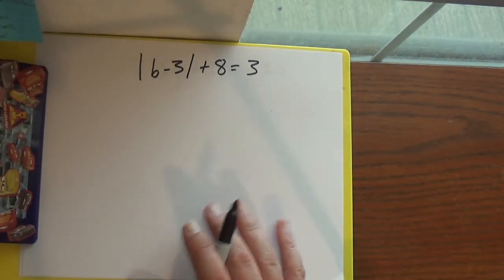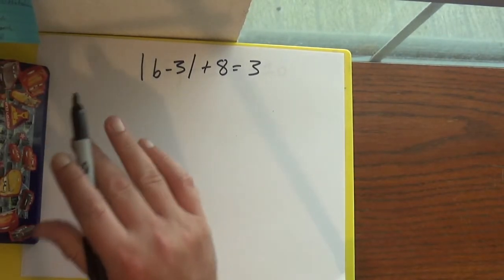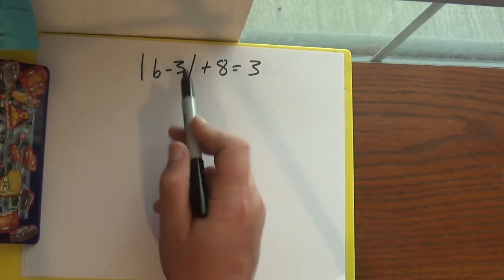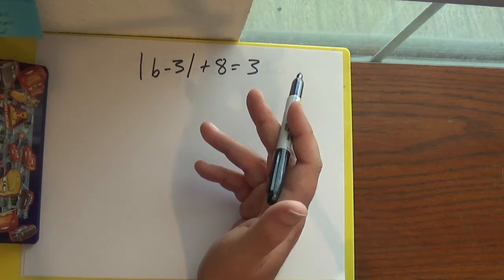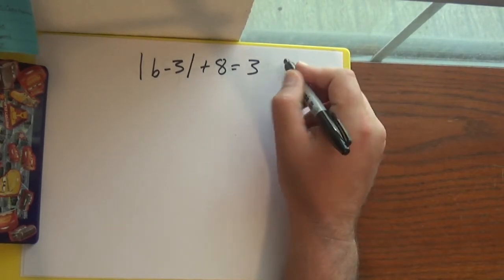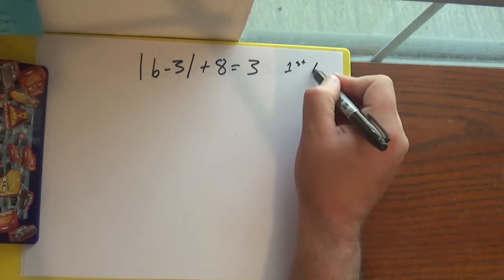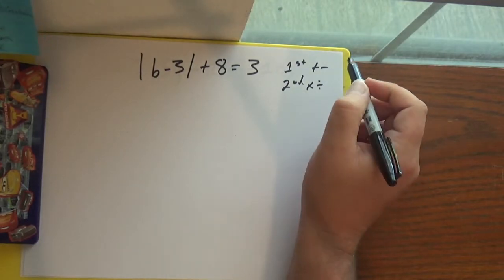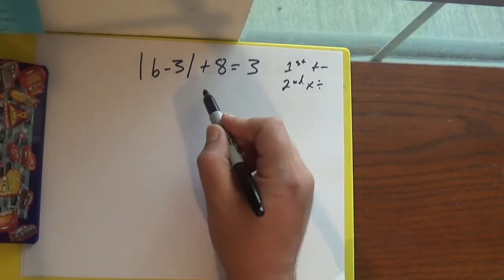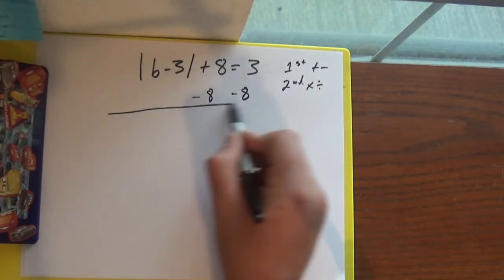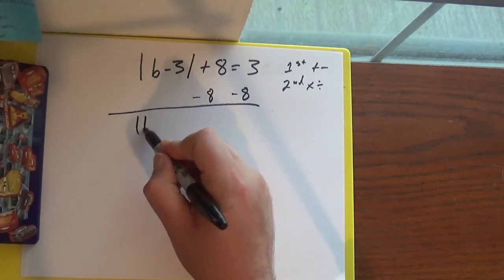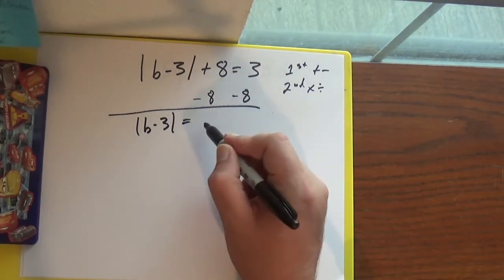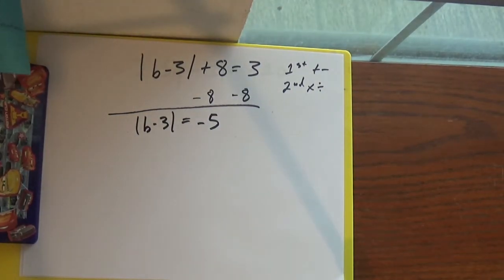Now in this case I've got to do something to get my absolute value alone before I can solve it. You can just treat it like this is one big variable and do the same thing you would to get the variable by itself. First do the add/subtract stuff, second do the multiply/divide stuff. In this case I don't even have multiply/divide stuff, so I'll subtract 8 from both sides. Negative 8 and 3 gives me negative 5.